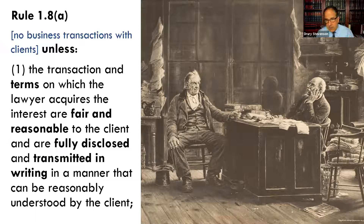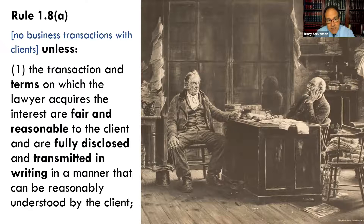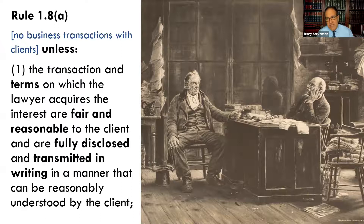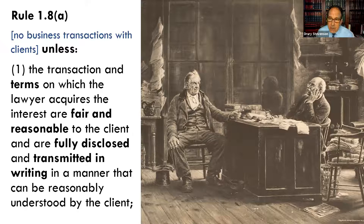Let's go through them one by one. 1.8(a)(1): the transaction and the terms on which the lawyer acquires the interest are fair and reasonable to the client, are fully disclosed and transmitted in writing in a manner that can be reasonably understood by the client. It has to be a fair and reasonable transaction. Even if you do everything else required, if this is a lopsided agreement — a sweetheart deal where the client is selling you something for a fraction of its fair market value — then that's not fair and reasonable to the client.